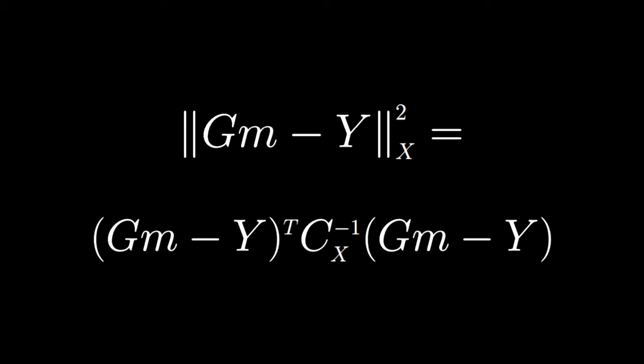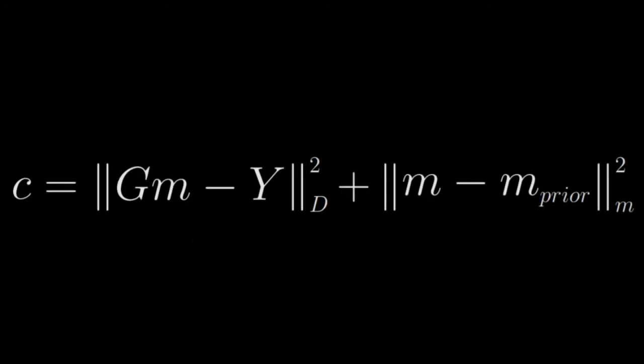So we can see here that the covariance matrices C, they don't depend on the model parameters. So when we do the partial derivative of this cost function that we'll define with respect to the model parameters, then it won't change any of the derivation other than we'll have to take care of where we move around these covariance terms.